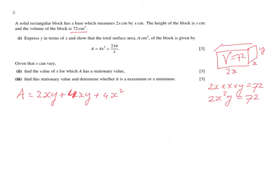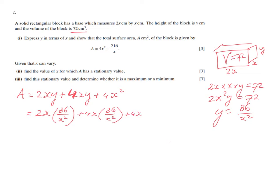The target formula only has x's, so we need to get rid of y. We can do that using the volume equation: making y the subject gives y equals 36 over x squared, because 72 divided by 2x squared is 36 over x squared. Substituting that into the surface area: 2x times y becomes 2x times 36 over x squared, and 4xy becomes 4x times 36 over x squared.